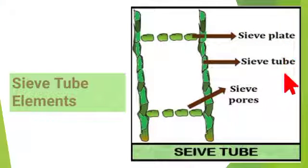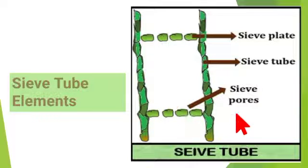Sieve tube elements consist of sieve tubes and sieve cells which form sieve plates. Sieve tubes appear as long and slender tubes joined to the adjacent sieve tube from end to end.